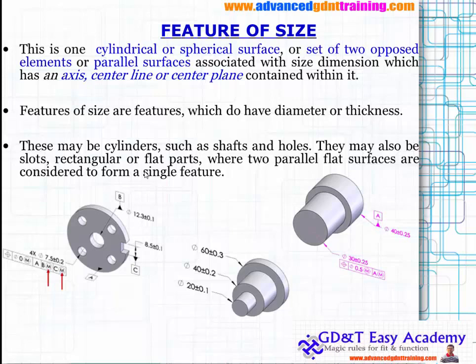Features of size may also have slots in rectangular format, or two opposed surfaces — that is flat parts where two parallel flat surfaces are considered to form a single feature. Feature of size is primarily interpreted in this way, involving opposite points or surfaces that can be directly measured.